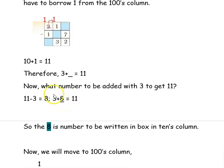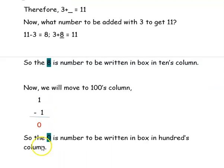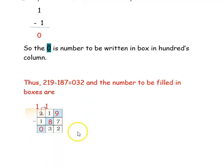Now we move to the hundreds column. We already had 2, but since we borrowed 1, it becomes 1. So in the hundreds column, 1 minus 1 is 0. So 0 is the number to be written in the hundreds column box. Thus 219 minus 187 is 32. The numbers filled in the boxes are 9 in the ones column, 8 in the tens column, and 0 in the hundreds column.